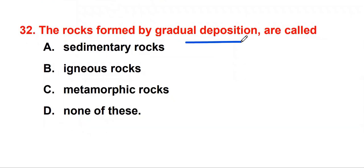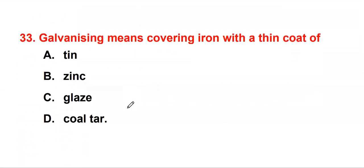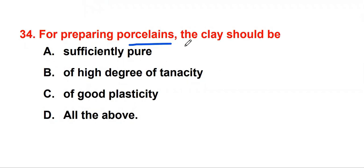The rocks formed by gradual deposition are called sedimentary rocks. If rocks form from gradual deposition of soil particles deposited at a particular place by air or water, and if stone is formed, it is called sedimentary rocks. If formed from sediments, it's called sedimentary rocks. If formed from molten magma, it is called igneous rocks. From both sedimentary and igneous rock, if you apply pressure, the modified form is called metamorphic. Galvanizing means covering iron with a thin coat of zinc. For preparing porcelains, the clay should be sufficiently pure, of high degree of tenacity, and of good plasticity. So all the above.